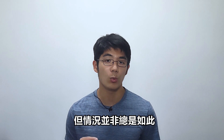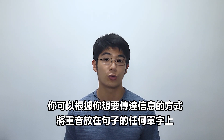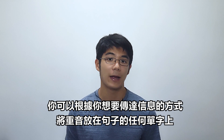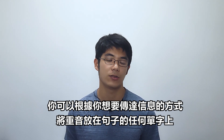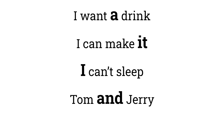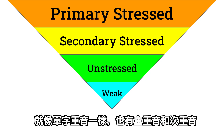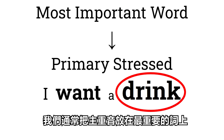But this is not always the case. Technically, you can place the stress on any word in a sentence depending on how you want to convey the message. For example: 'I want a drink,' 'I can make it,' 'I can't sleep,' 'Tom and Jerry.' And just like word stress, there are also primary sentence stress and secondary sentence stress. We normally place the primary stress on the most important word.